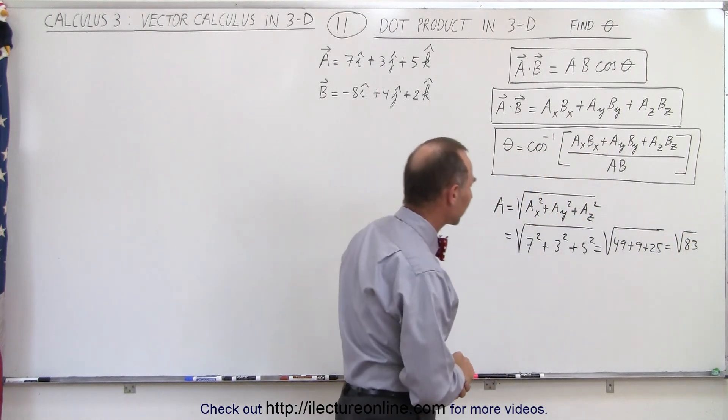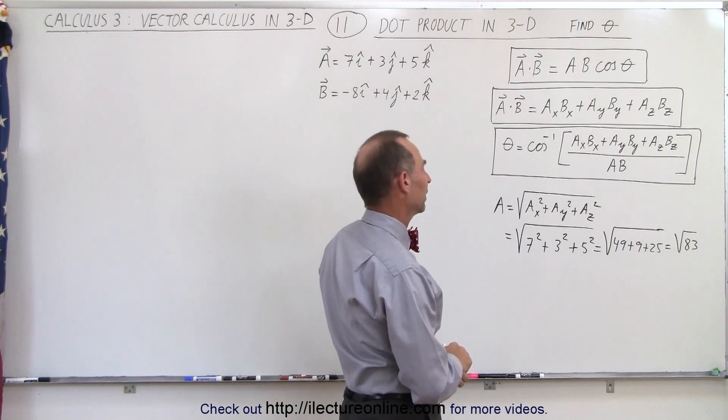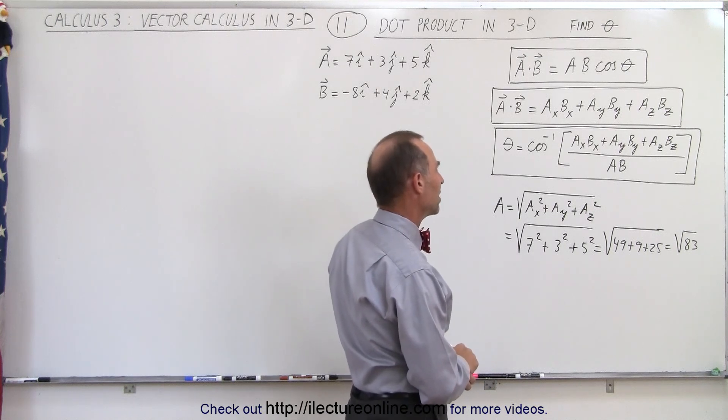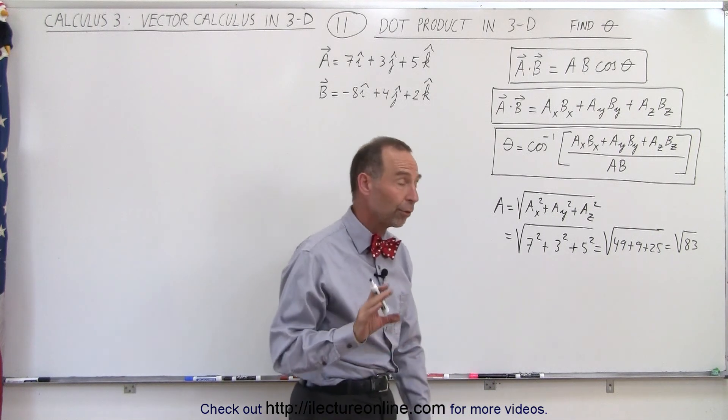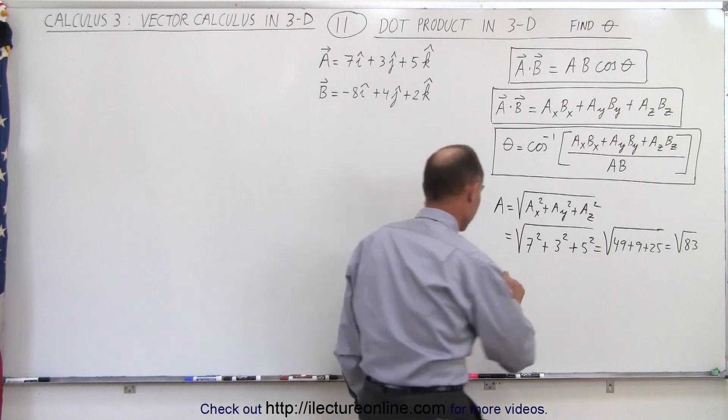Let's verify: 49 plus 9 is 58, plus 25 is 83. That's correct. Now for B.